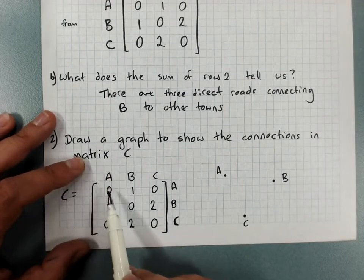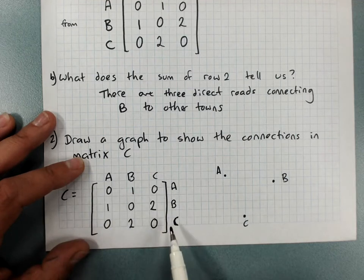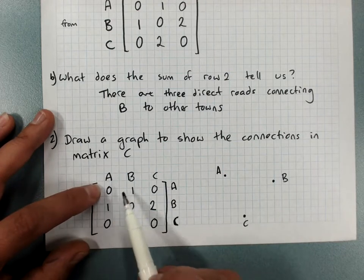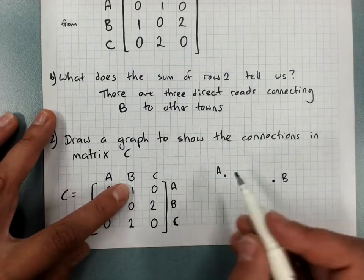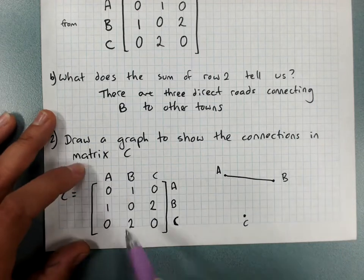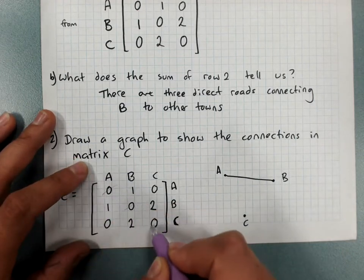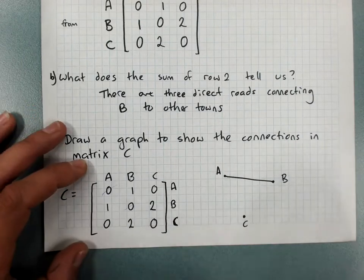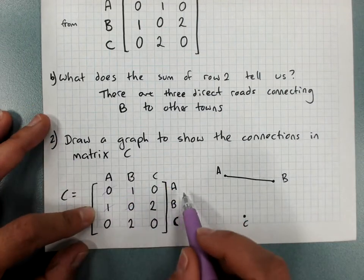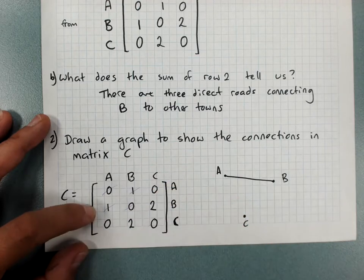From A to A, nothing. From B to B, nothing. From C to C, nothing. So we know there's no loops. From A to B, one road. If I'm doing this in a test I actually quite like to cross off as I've tackled something. So from A to B means that from B to A is also dealt with.